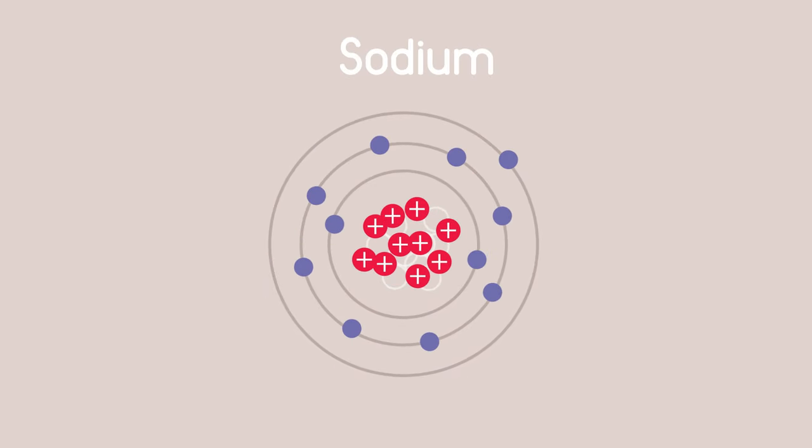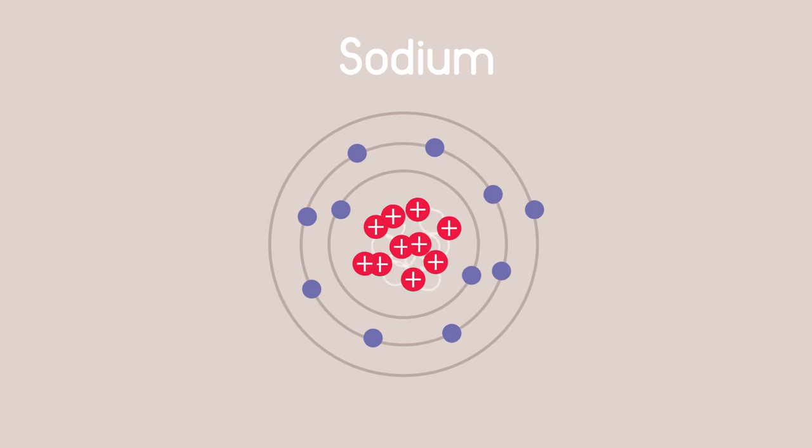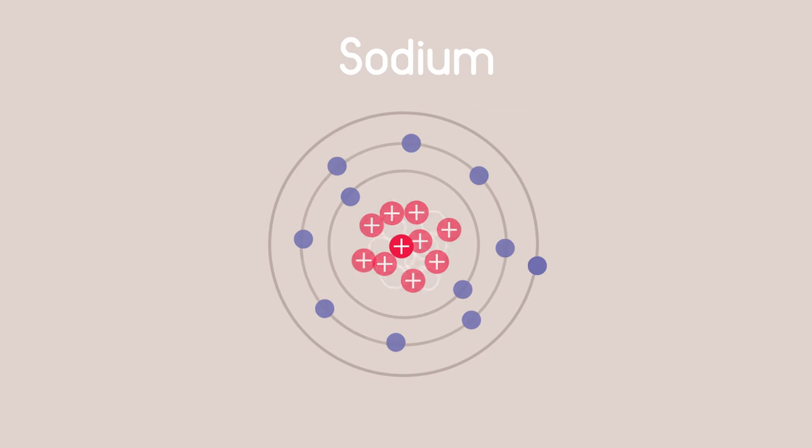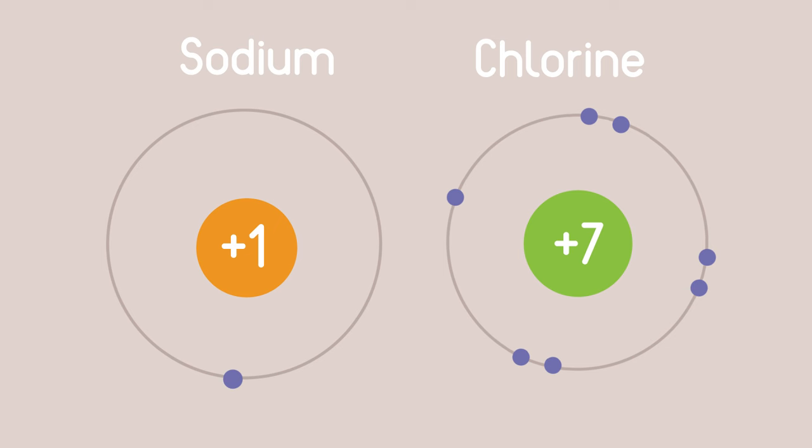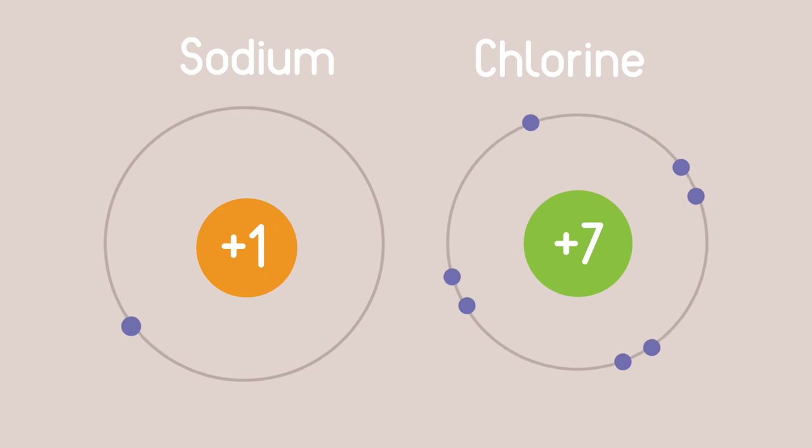Sodium with 11 protons and 11 electrons has also 10 inner electrons leaving an effective charge of only plus 1 to hold its single outer electron. Thus we see why non-metals with nearly full shells hold onto their electrons more strongly than metallic elements with nearly empty shells.